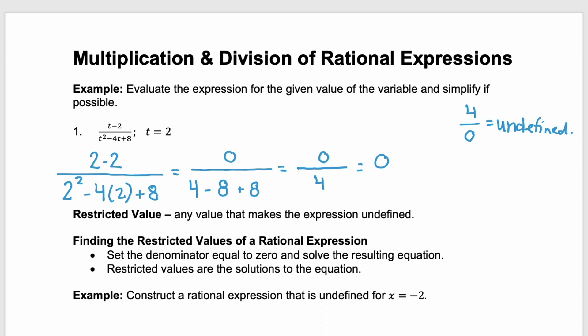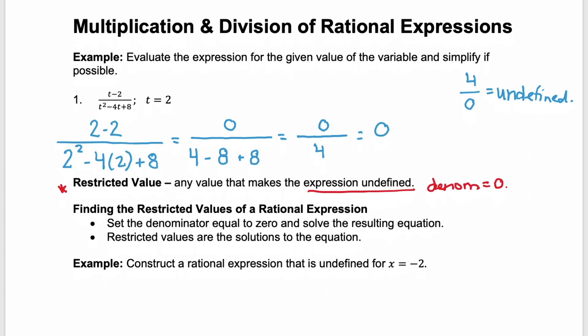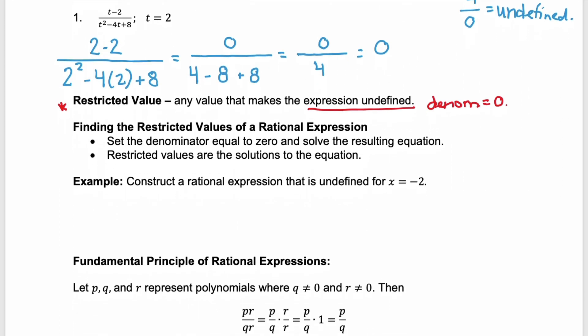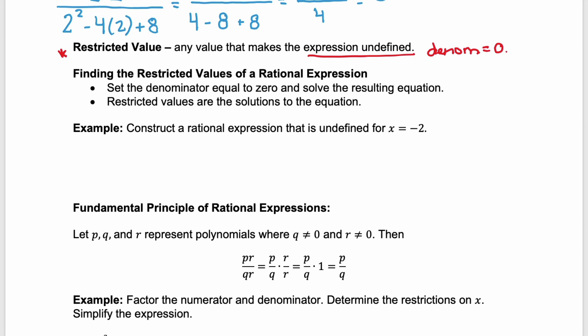If we ever come to a situation where we have to divide by 0, that would be a restricted value. It's any value that makes the expression undefined, or for a rational expression, that would be when the denominator is equal to 0. So how do we find those restricted values? Step 1: set the denominator equal to 0 and solve the resulting equation. Step 2: your restricted values are the solutions to that equation.